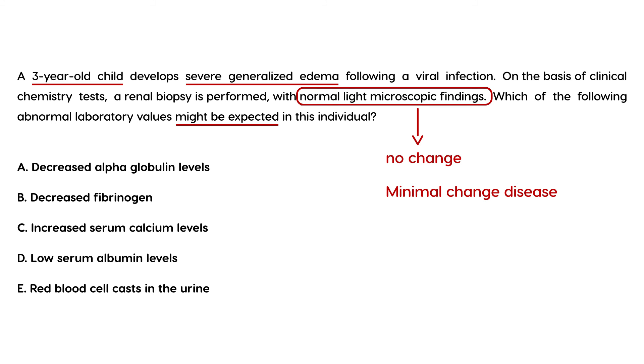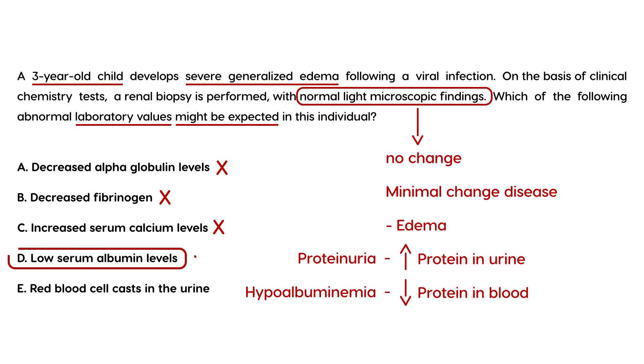And then we all know in minimal change disease, what do we have for lab values? Well, we have edema, but edema is not a lab value. We have elevated protein in the urine and we have low protein in the blood. So this would be the technical terms: hypoproteinemia or hypoalbuminemia, because albumin is the specific protein we're talking about, and this is just proteinuria. So let's see if one of these is one of the answer choices. Decreased alpha globulin levels? No. Decreased fibrinogen? No. Increased serum calcium? No. Low serum albumin levels? Yep, that's the one. Hypoalbuminemia.